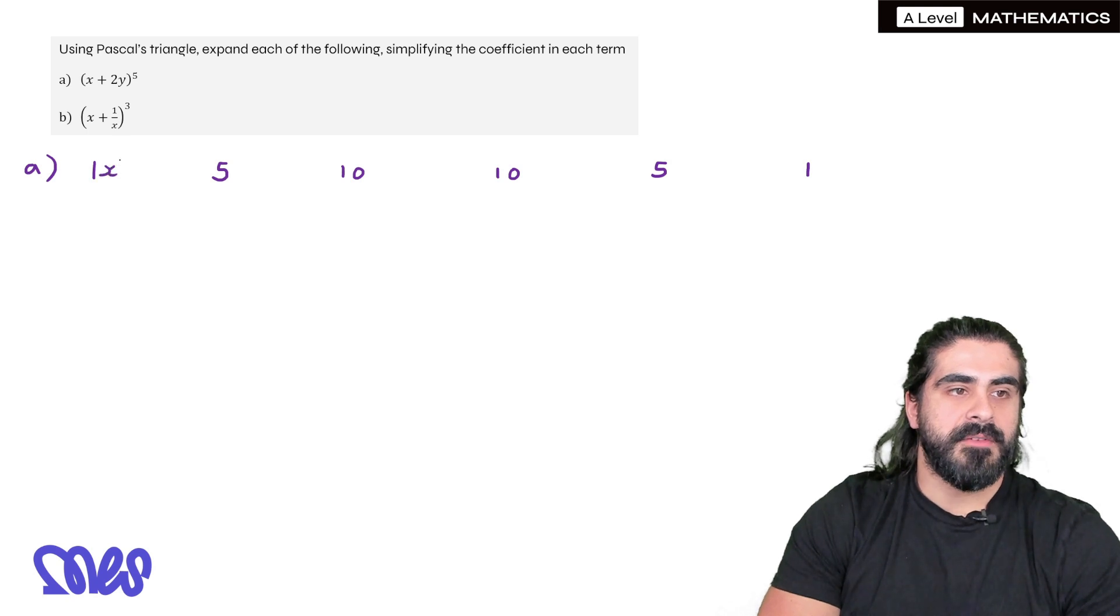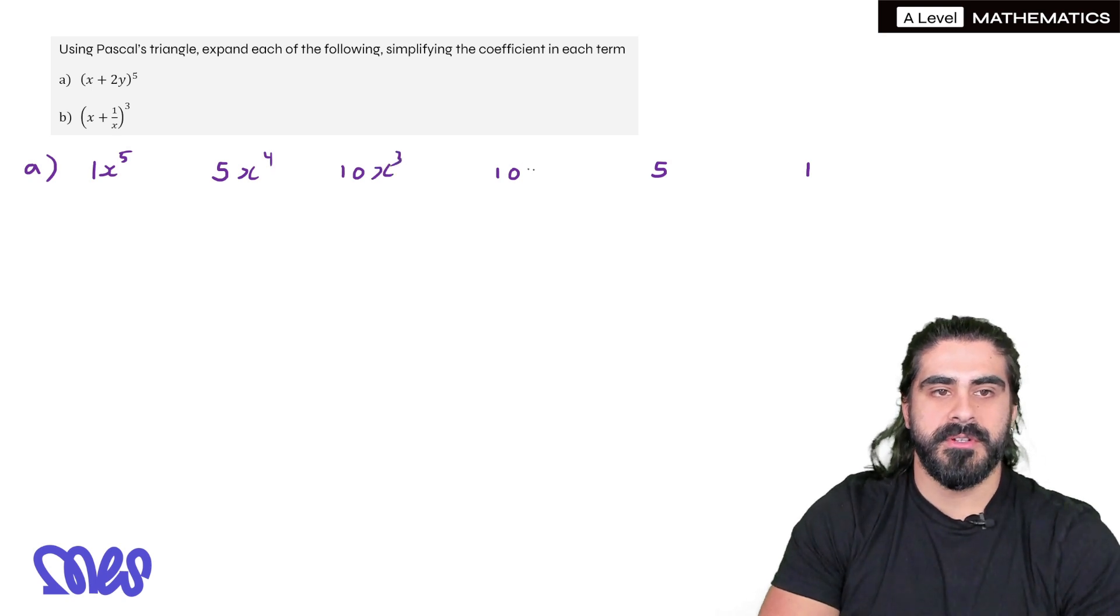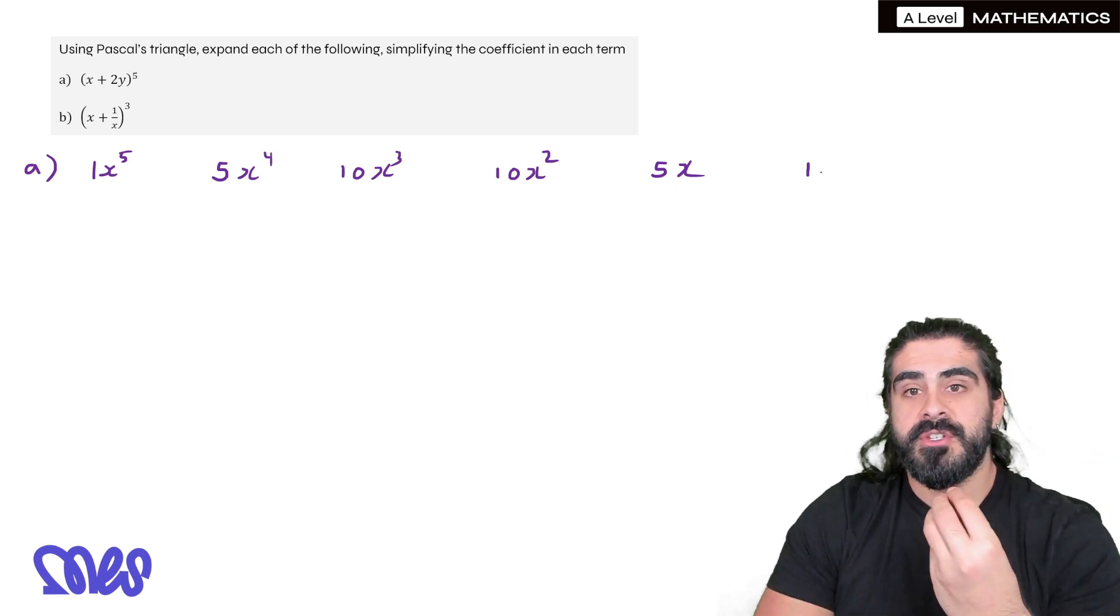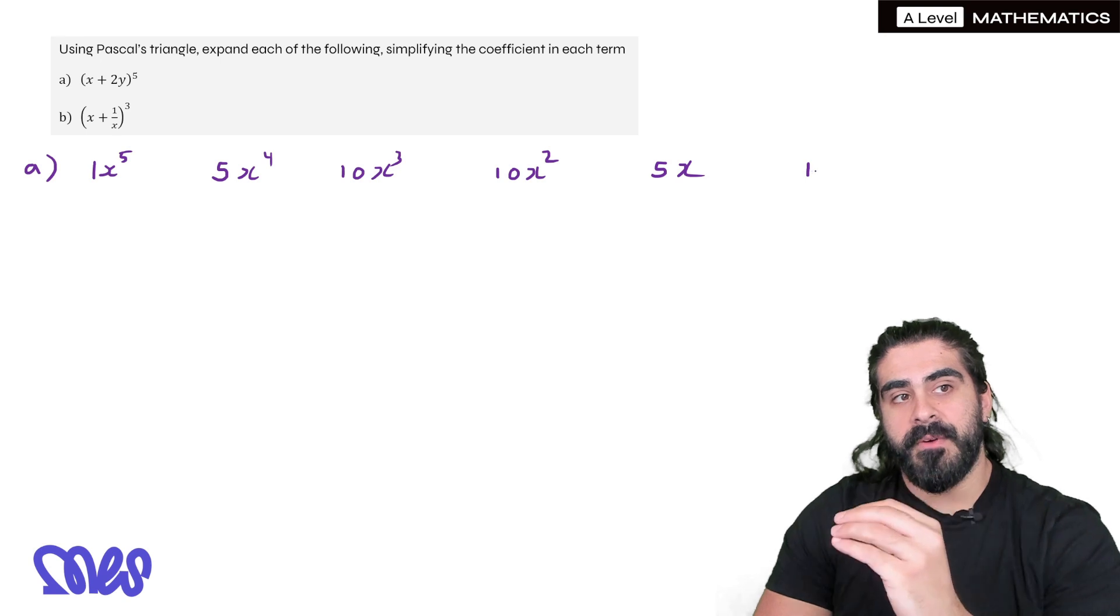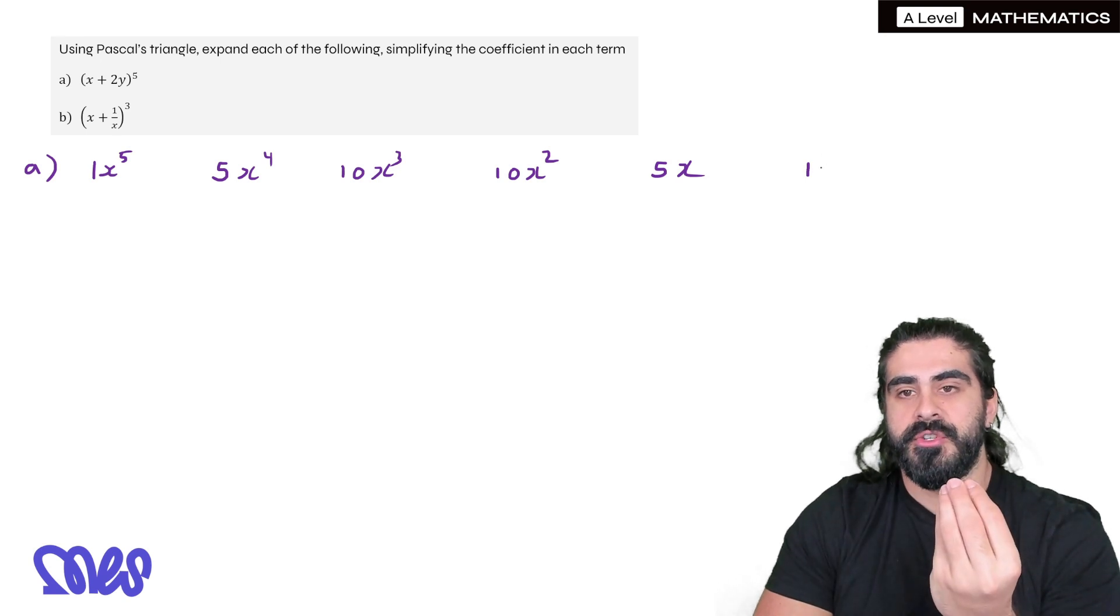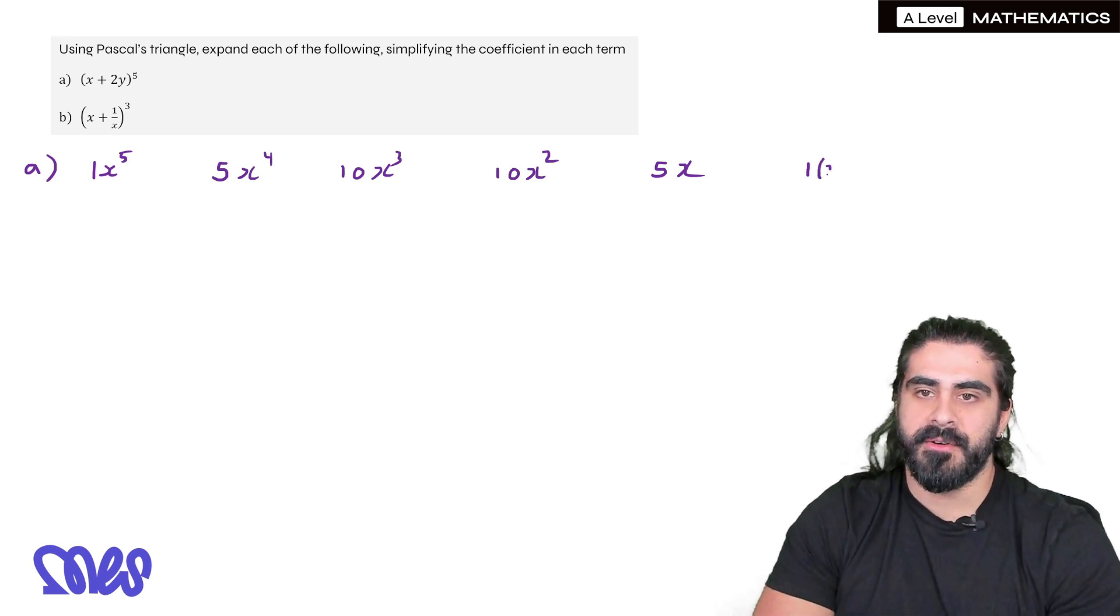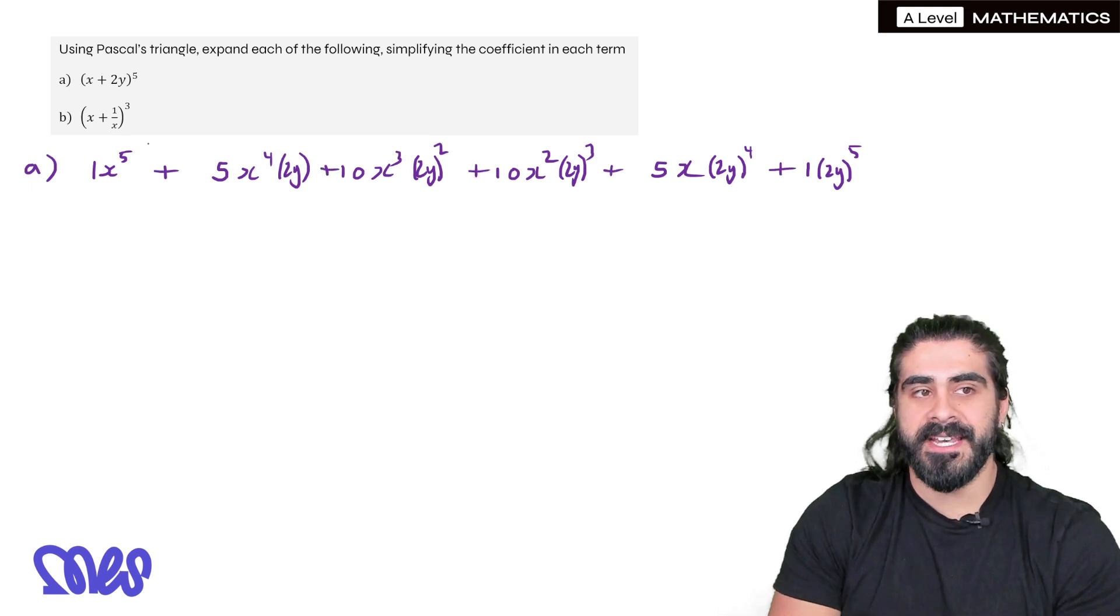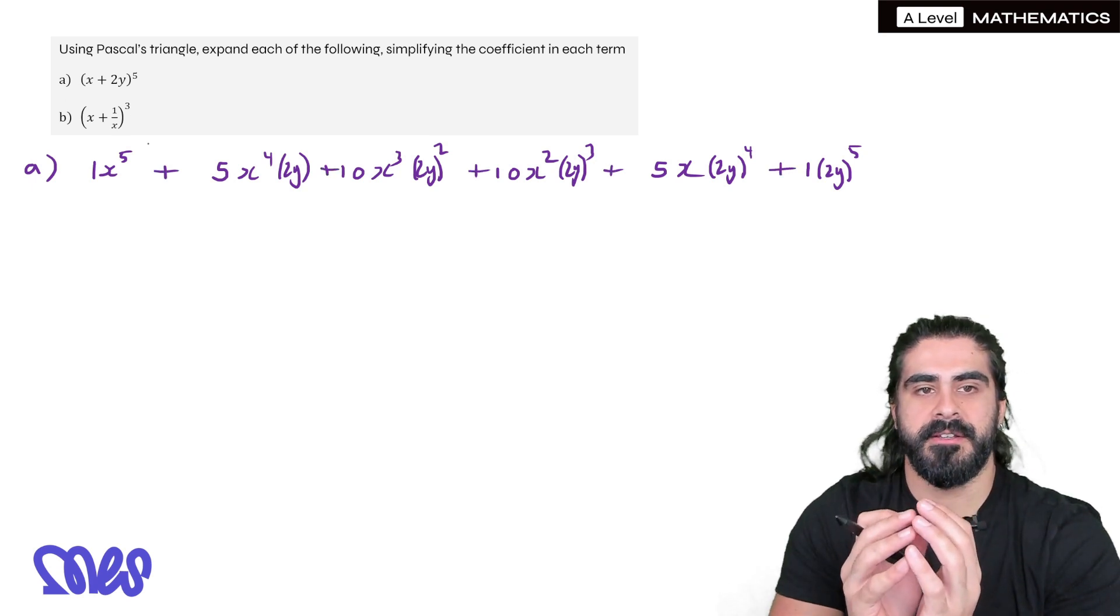So we have x⁵ and then it's going to go down. So x⁴, x³, x², x, and then x⁰ we don't need to write that. Then what I do is I just go the other way. So when we do power 5 of the second term we have to include the 2. So it's (2y)⁵, (2y)⁴, (2y)³, and then no 2y. All pluses in between. If one of the terms was negative then you would have to put that in the bracket.